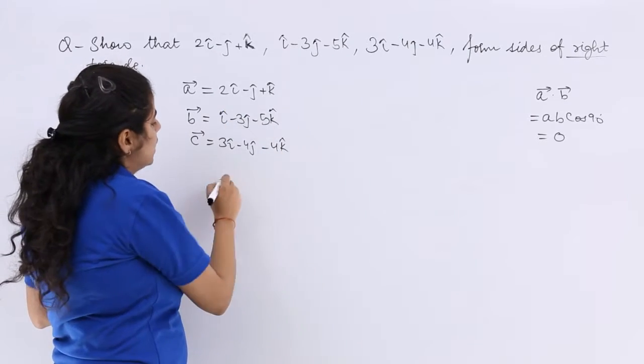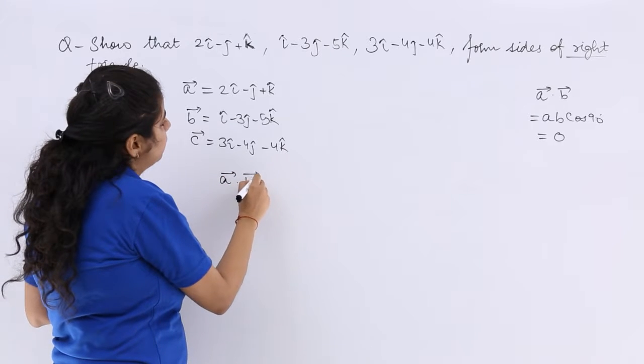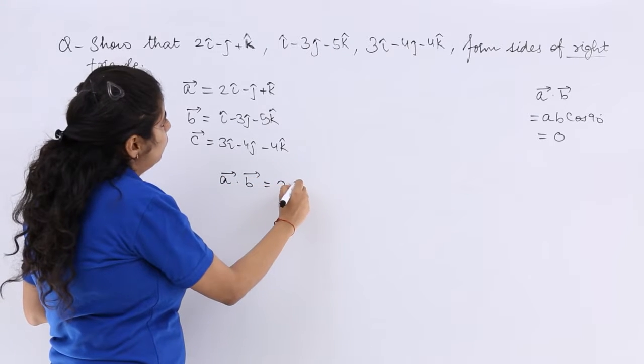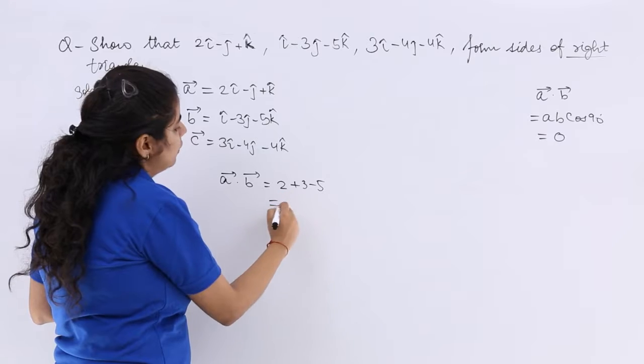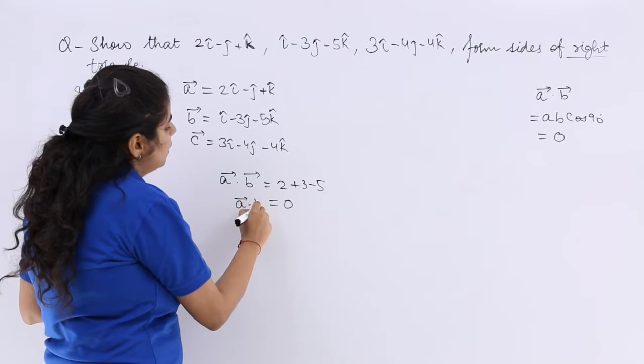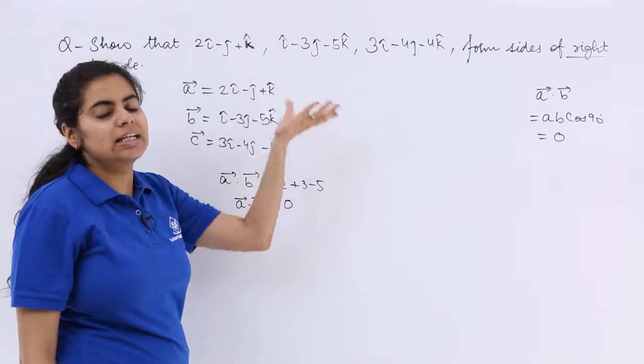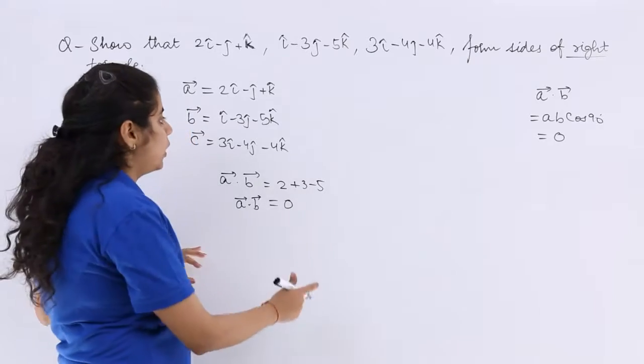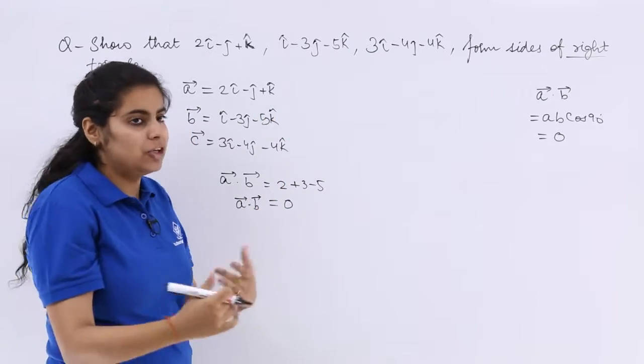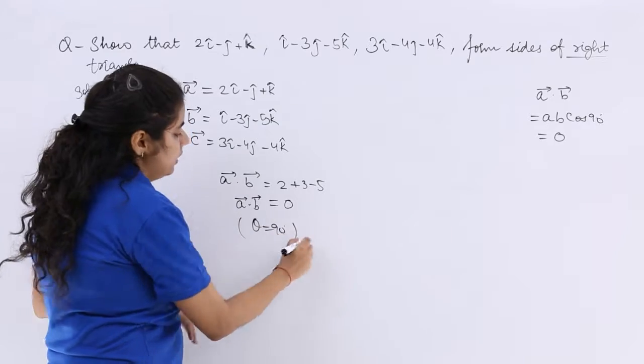If I check for this, if I check for A dot B, I have 2 plus 3 minus 5 which is 0. So that means these two sides are giving me 0 dot product. Definitely their magnitudes are not 0, so the theta is 90 degrees.